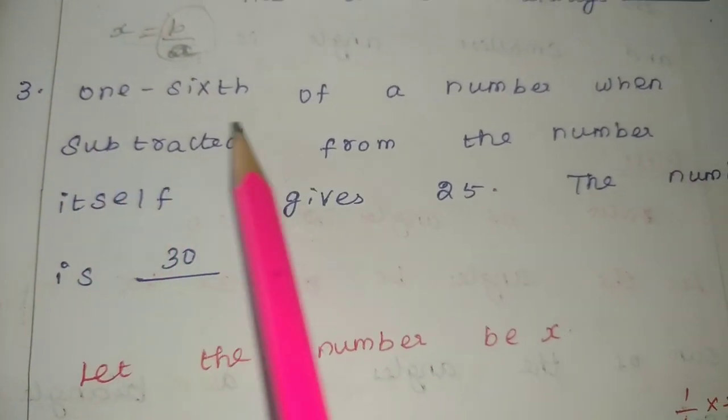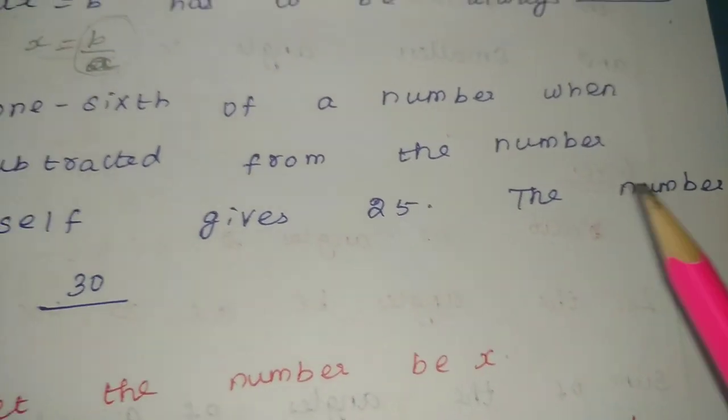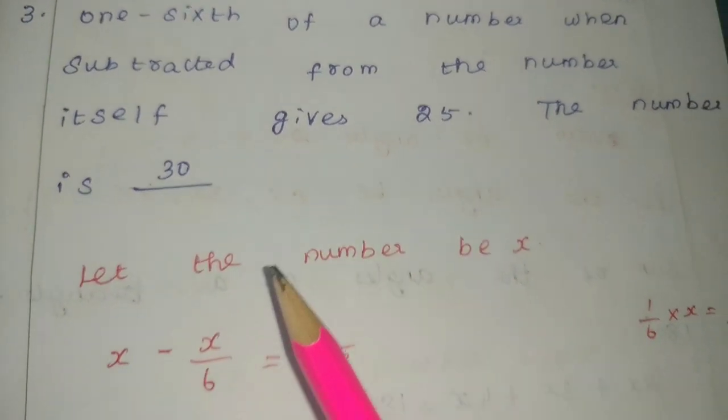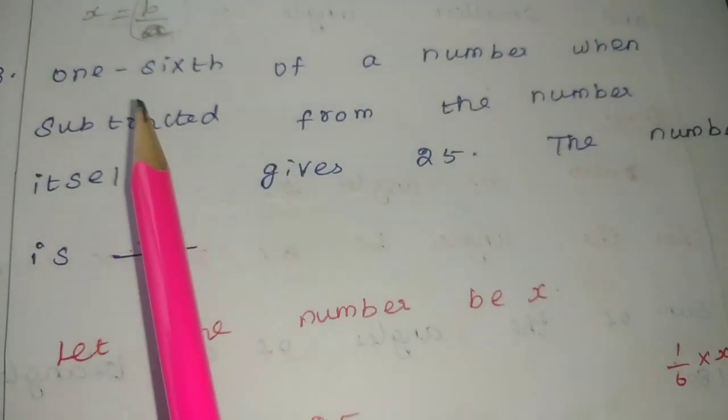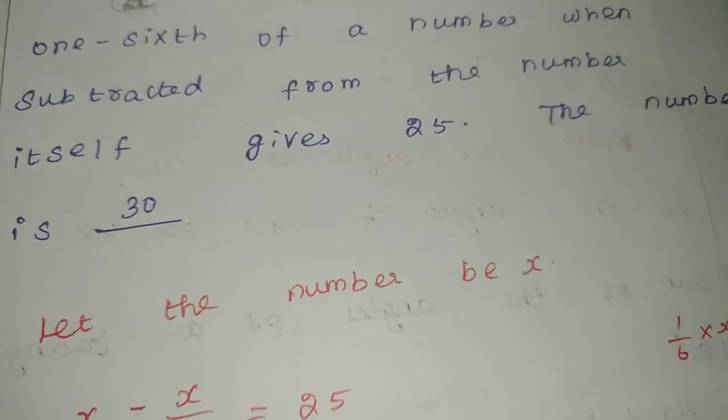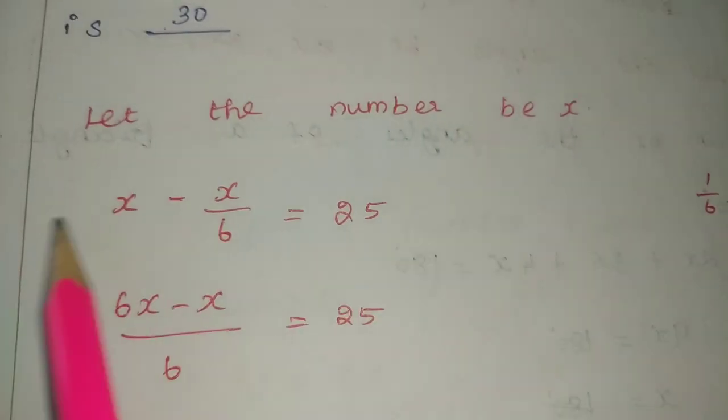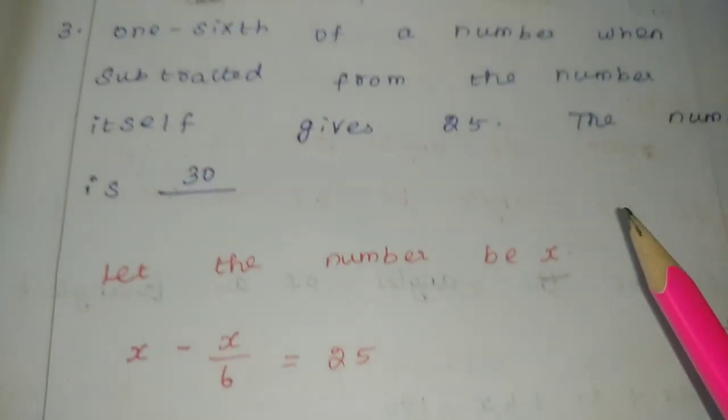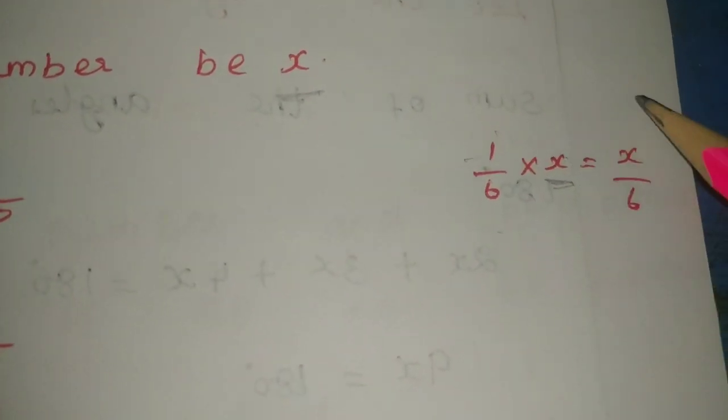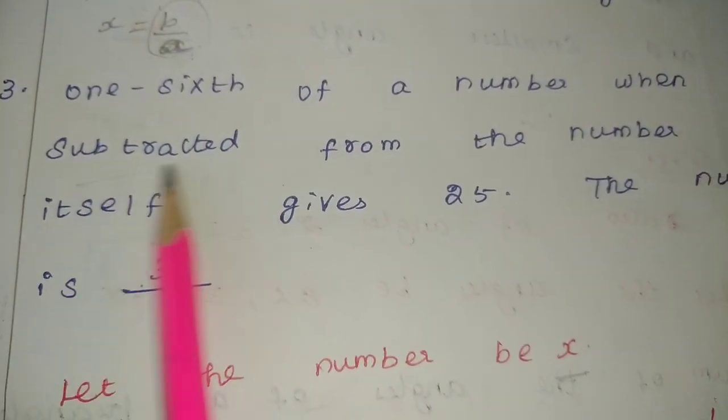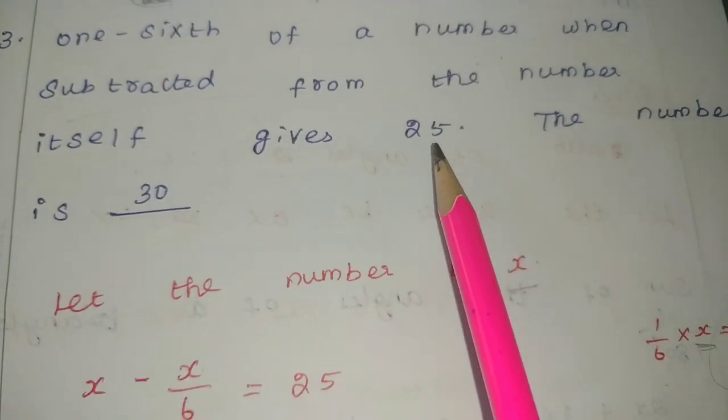Next, third one: one-sixth of a number when subtracted from the number itself gives 25. Then the number is dash. Let the number be x. The number is x. One-sixth of the number is x by 6. When subtracted, we get x minus x by 6 equals 25.